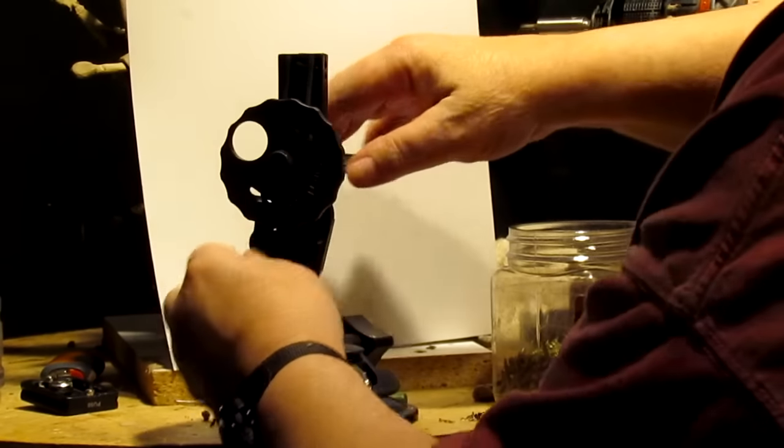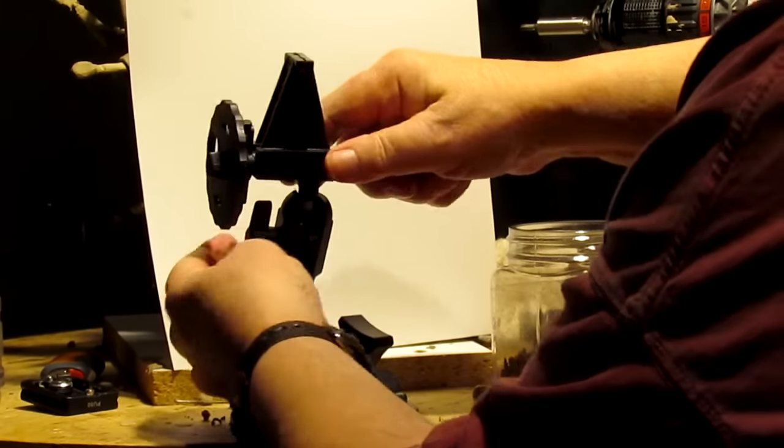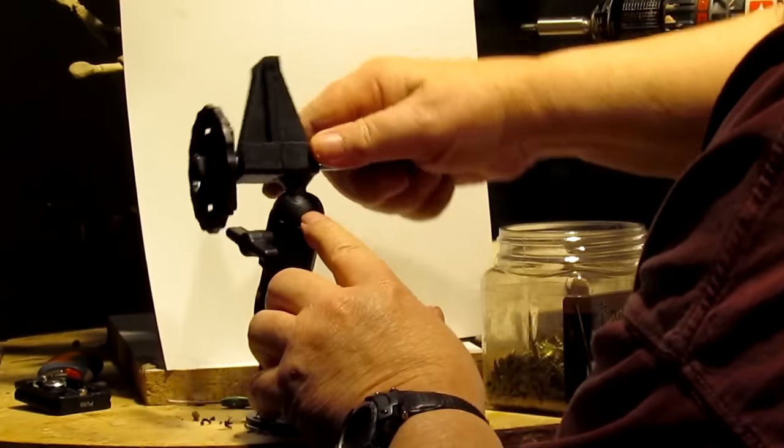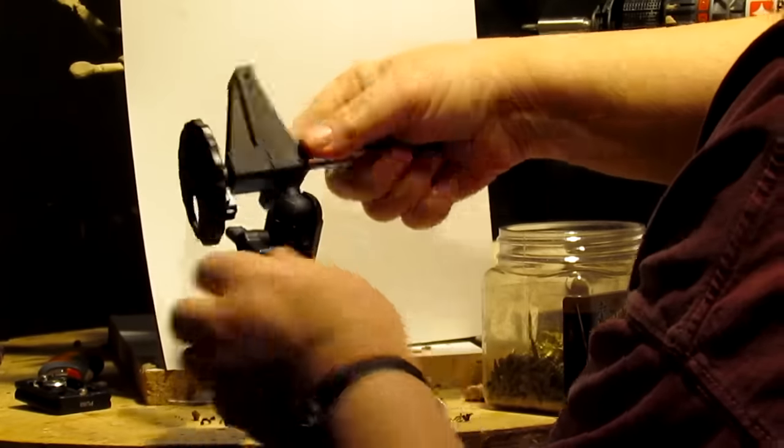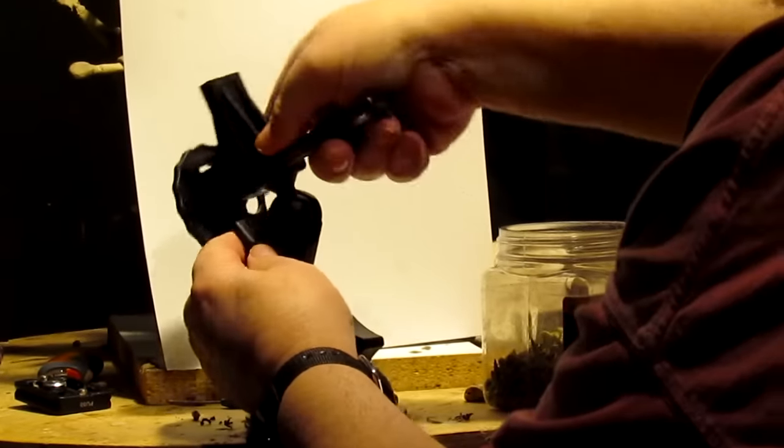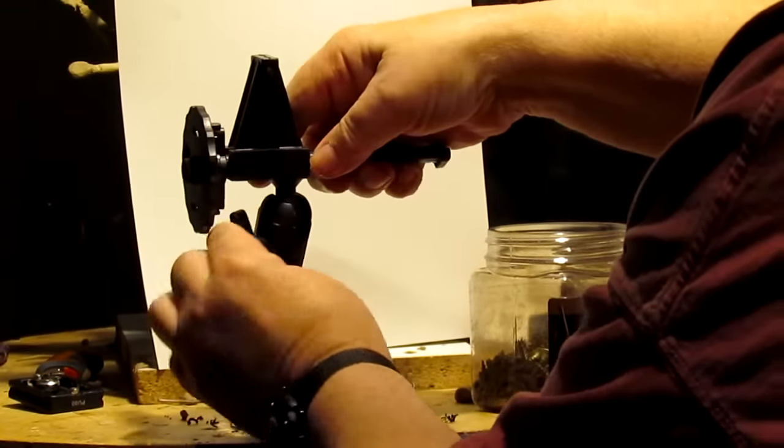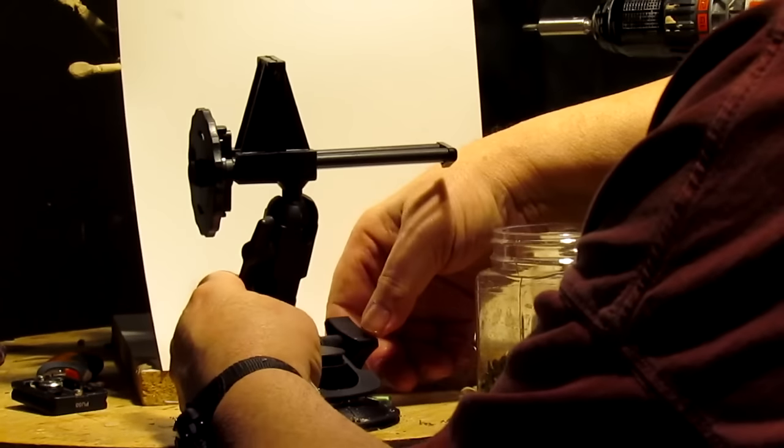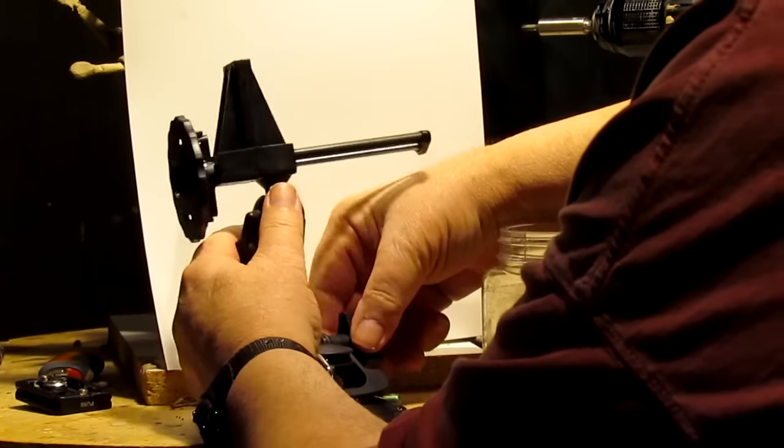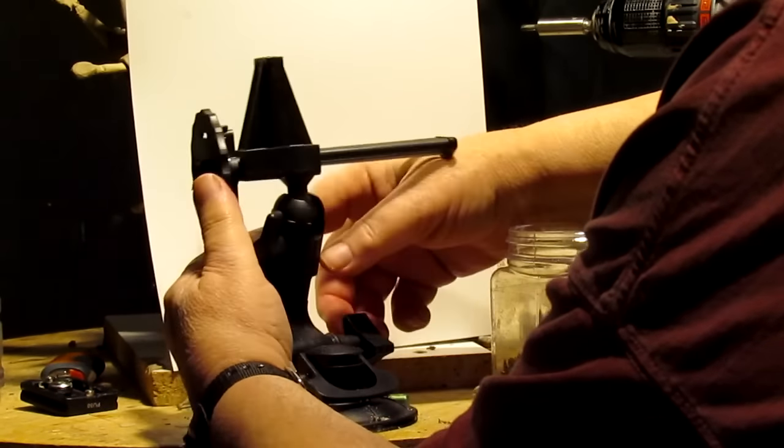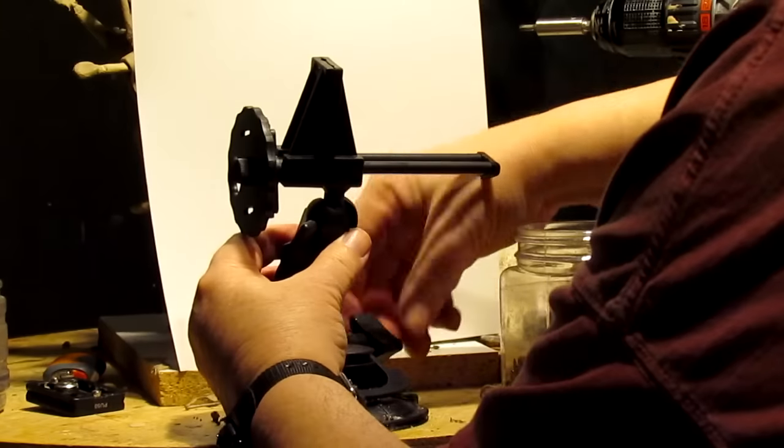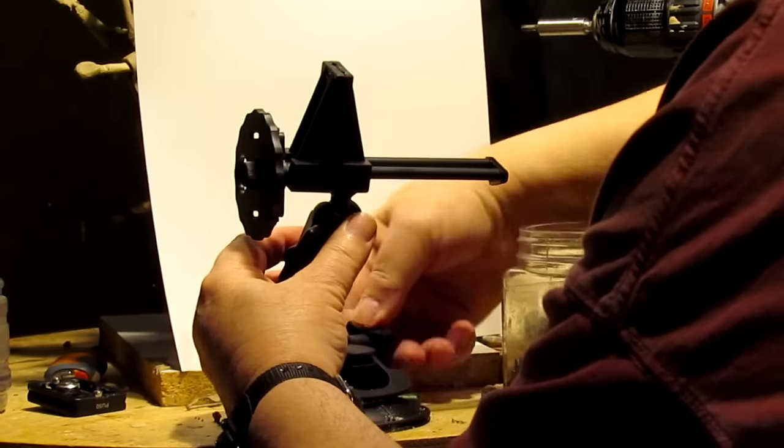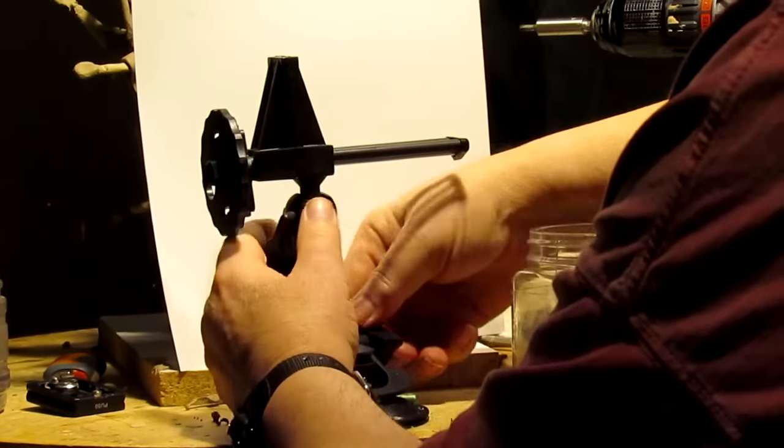It has a ball joint right here, so you can put it forward, backwards, and turn it forward and backwards, so it gives you full scope of positions, and then you got this which you can set at any angle you want to. Let's get this right there.